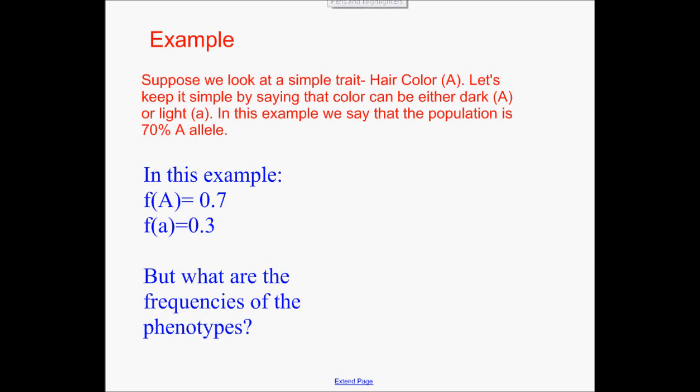We're going to use a little terminology here. The frequency of A is 0.7, which of course means 70%. And if it's a simple system — one gene, two alleles, dominant and recessive — that means that the frequency of the recessive allele, small a, would be 0.3. They've got to add up to one, right? 100%.